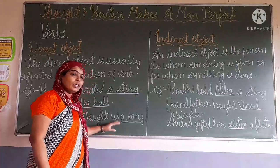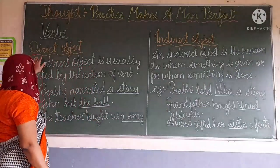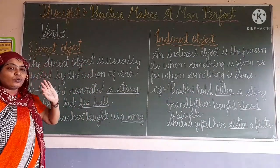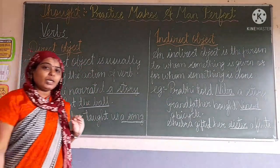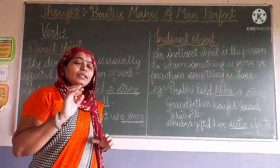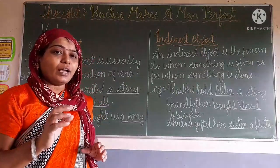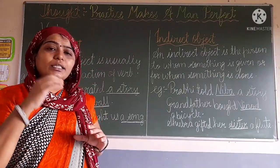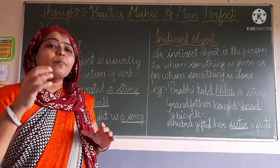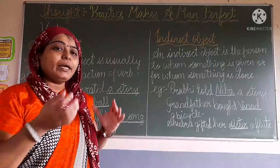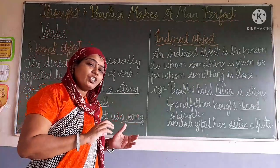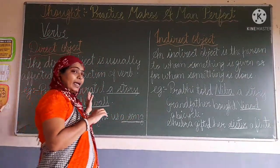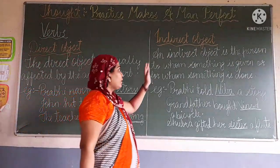So the word 'a song' is the direct object. You always have to keep in mind that a direct object is usually affected by the action of the verb.